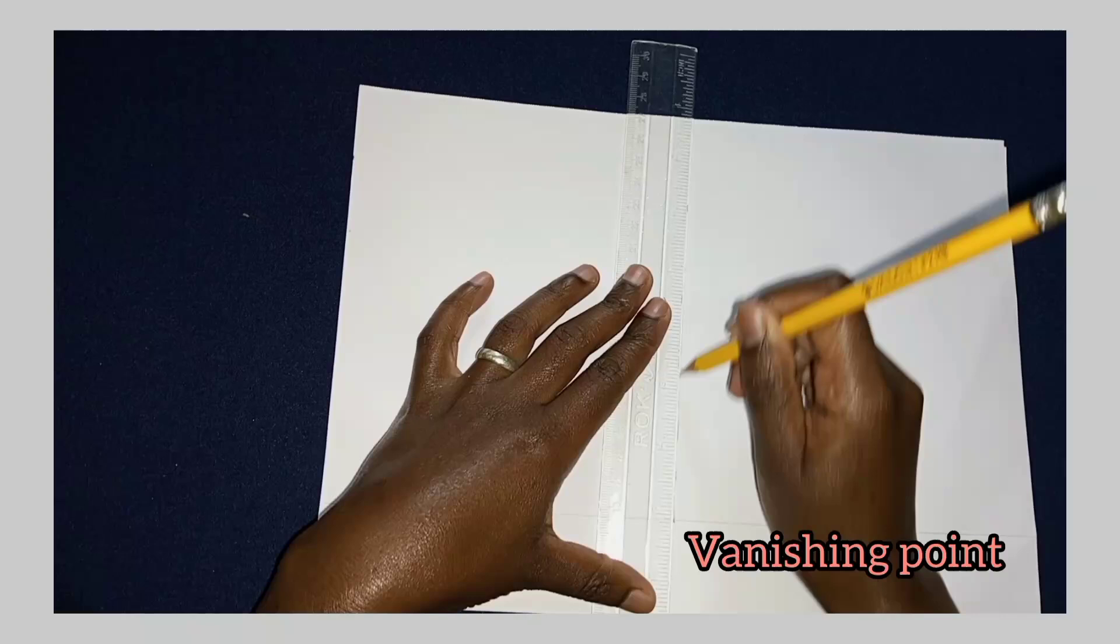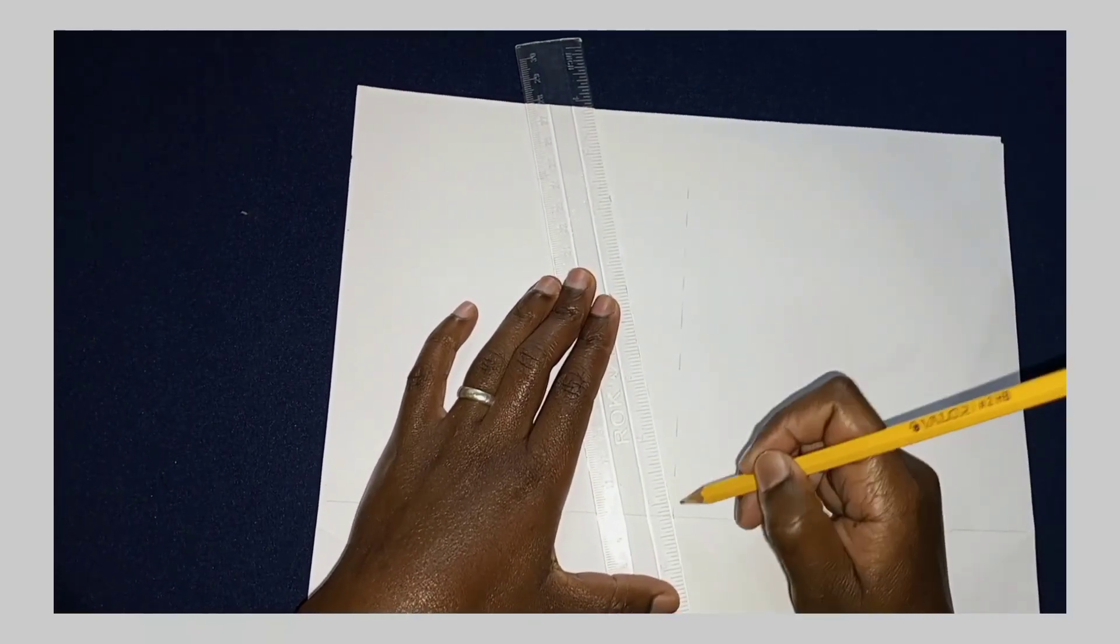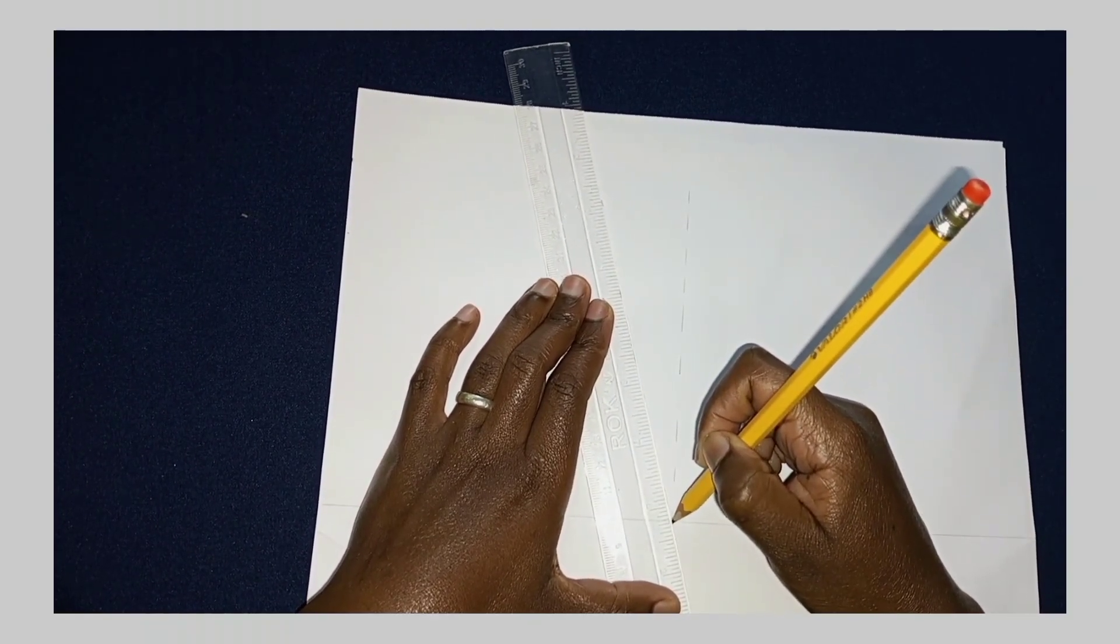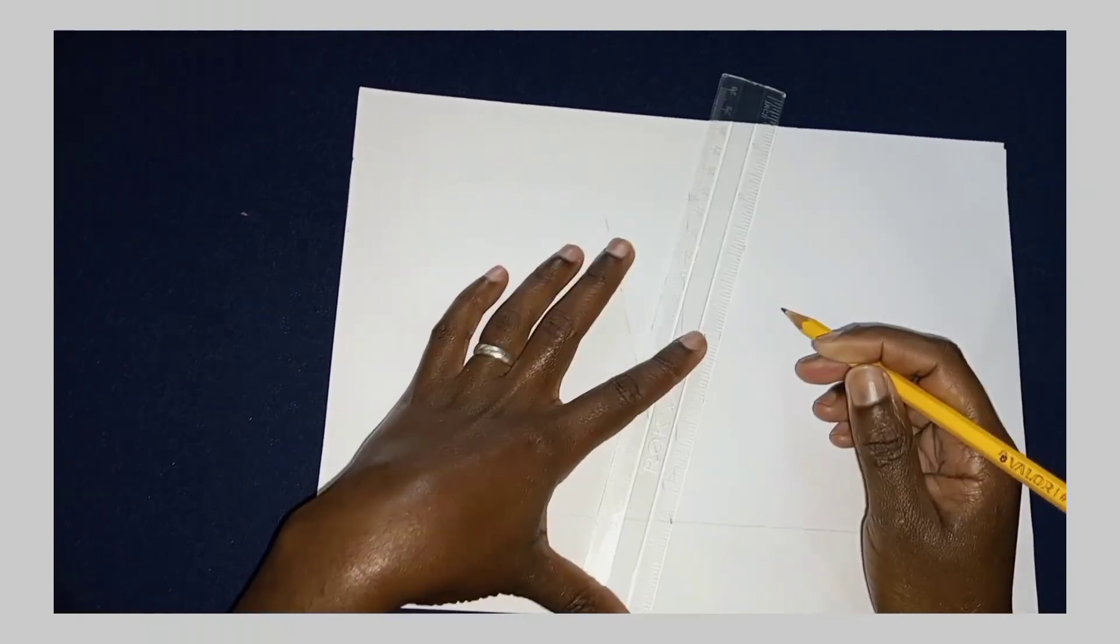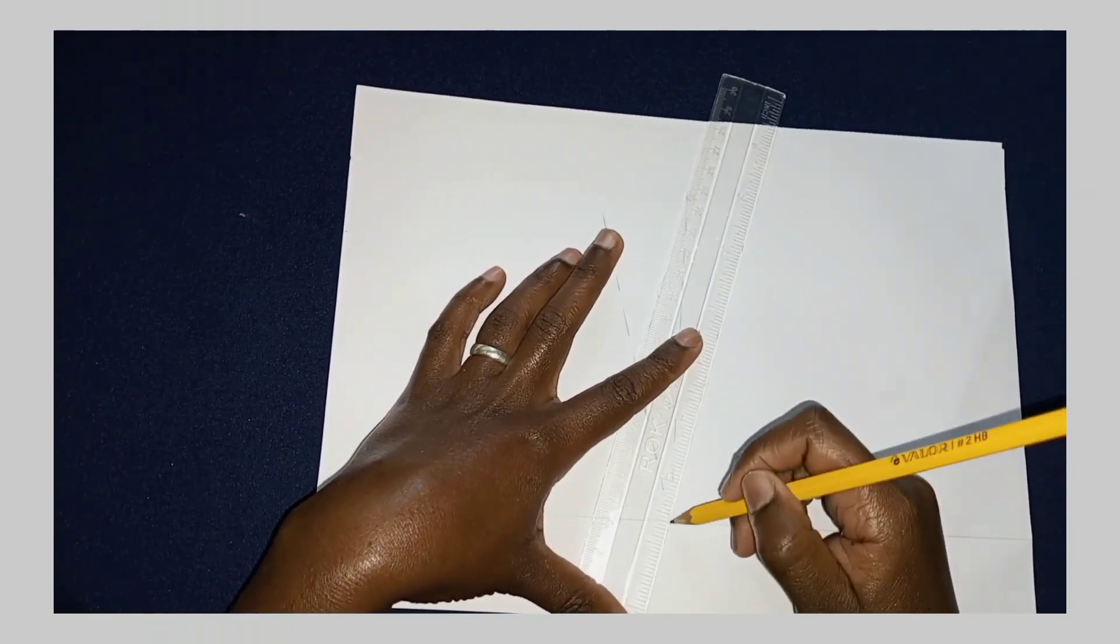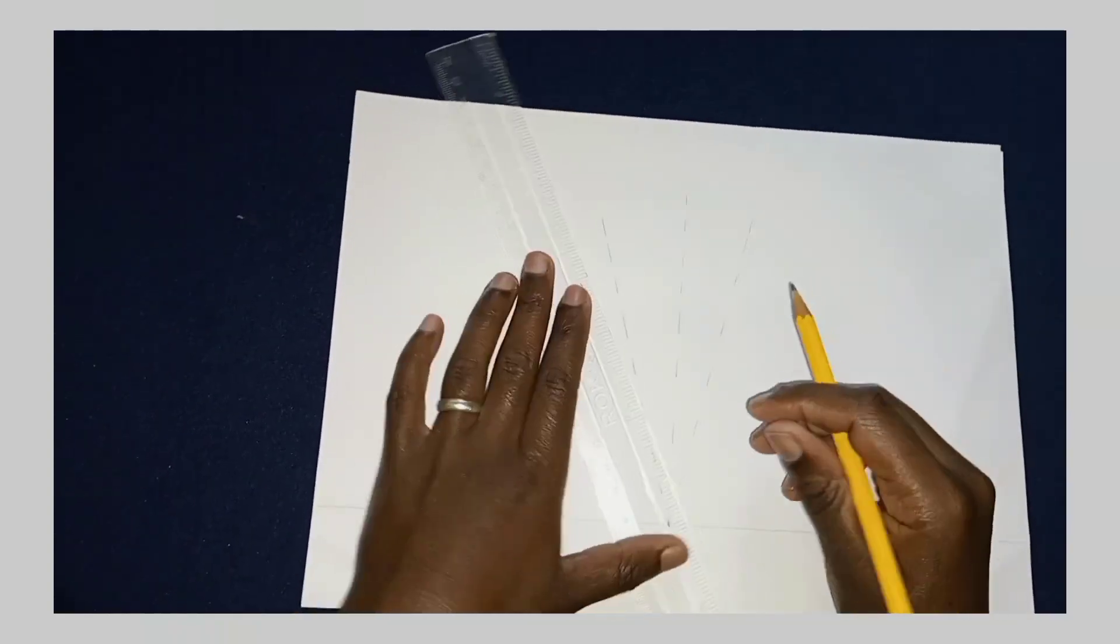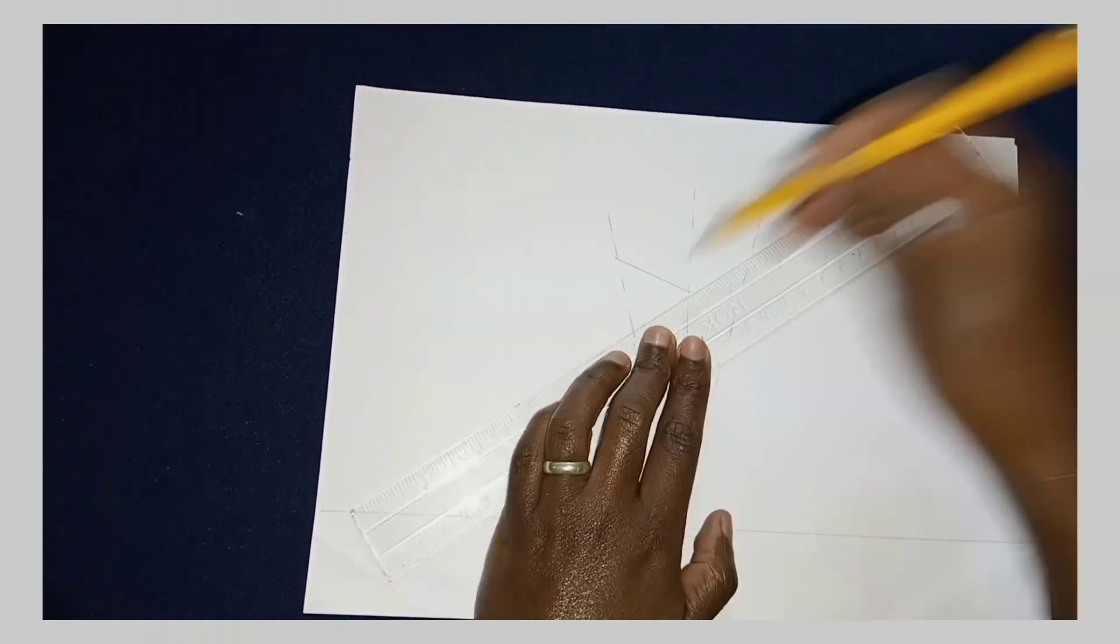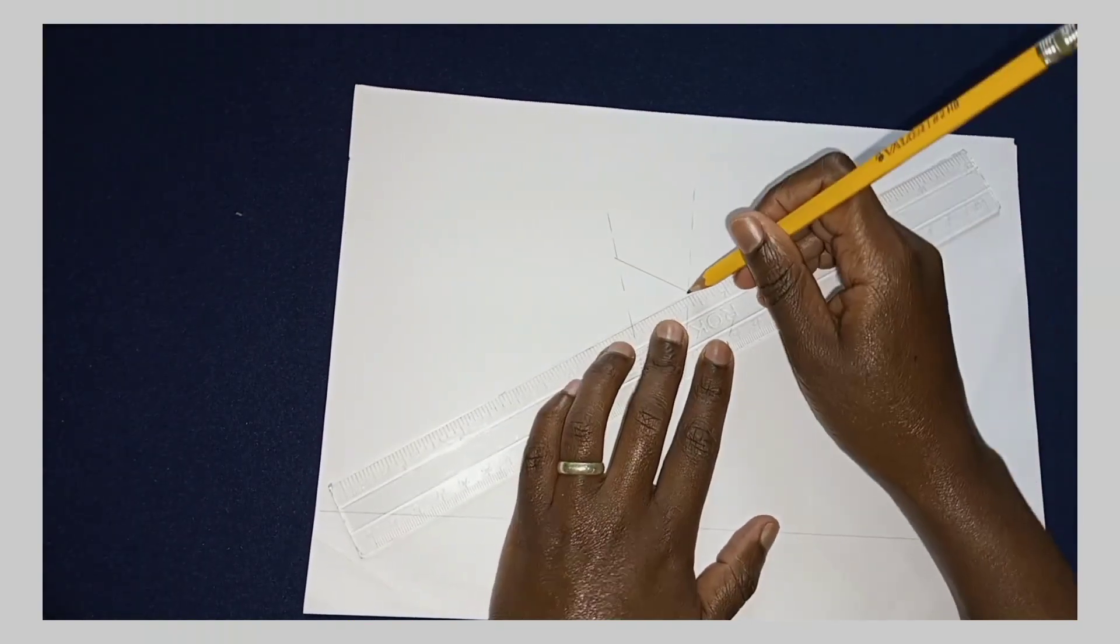Mark the vanishing points and then you draw the projection lines as follows. Draw the faces of the cuboid as shown.